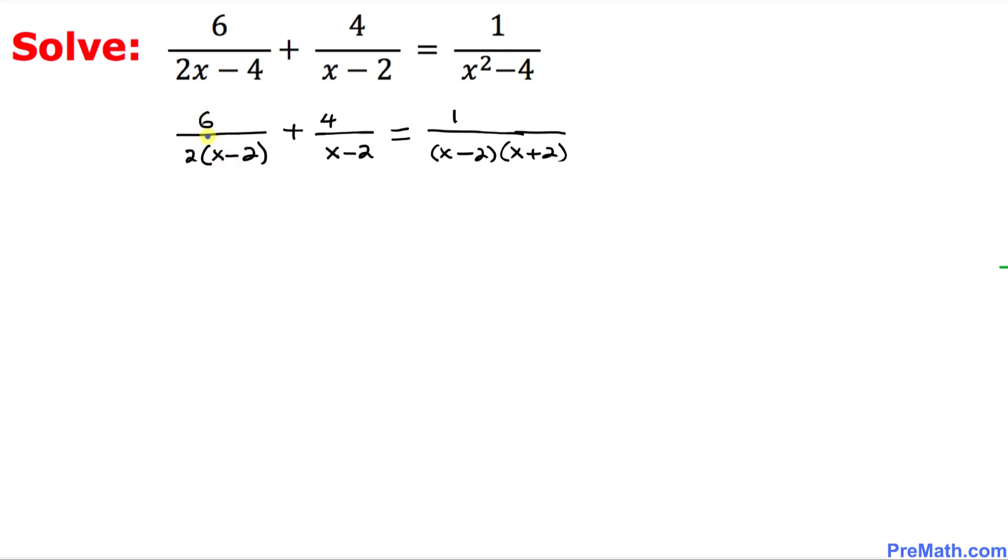And now we can see in this very first fraction, 2 and 6 could be reduced to 3. So this could be written as 3 divided by x minus 2 plus 4 over x minus 2 equals 1 over x minus 2 times x plus 2.